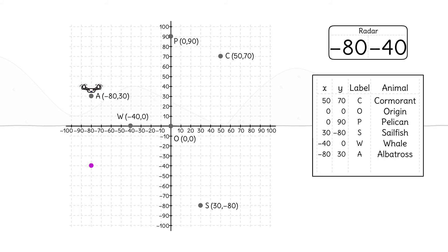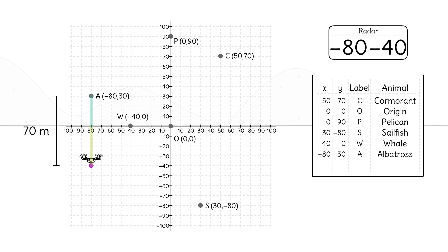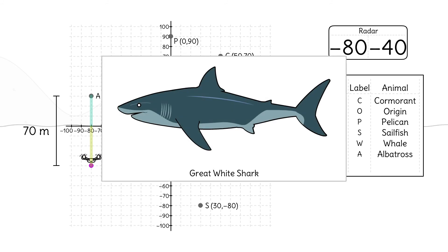Will the drone have to move horizontally? No, it's already at an x-value of negative 80. Will it have to move vertically? Yes, from positive 30 to negative 40. How many meters is that? From positive 30 to negative 40 is a 70-meter drop. It's a great white shark.